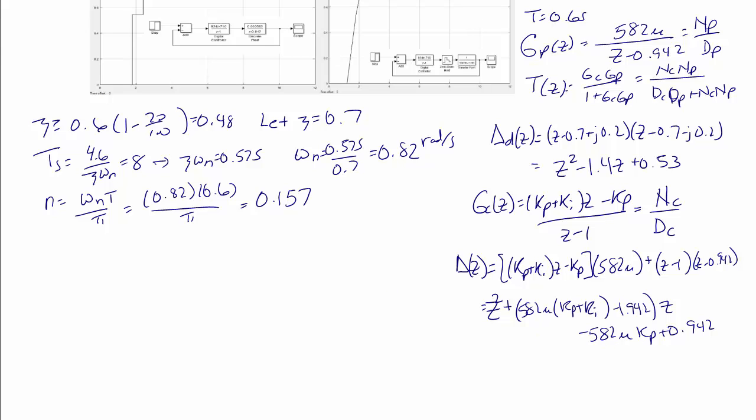So in order to solve, we're going to equate coefficients. So we're going to equate 582 micro times kp plus ki minus 1.942 to negative 1.4. And we're also going to equate 0.53 to negative 582 micro kp plus 0.942. So 0.942 minus 582 micro kp is equal to 0.53, which yields kp equal to 710. 582 micro times kp plus ki minus 1.942 equals negative 1.4 yields ki equal to 224.